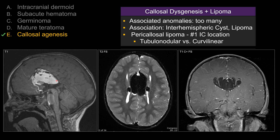There are two types. One is the tubulonodular type, as in this case. These are usually much thicker — greater than 2 centimeters — and typically involve the anterior aspect of the corpus callosum, sometimes associated with other frontal facial anomalies. This is a more severe form compared to the curvilinear type, which typically involves the more posterior aspect of the corpus callosum and is much thinner, less than 1 centimeter thick.